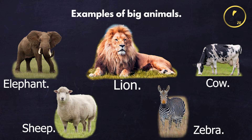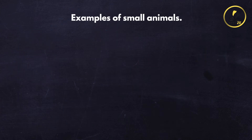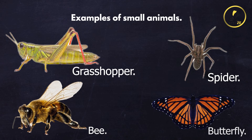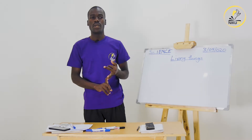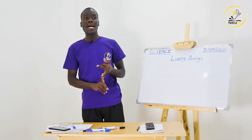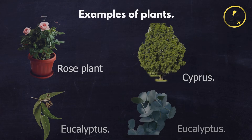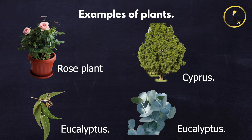goat, sheep, etc. Small animals include animals that are able to fly, like grasshopper, butterflies, spider, etc. Those are examples of animals. For plants we have rose plant, cypress, eucalyptus — and you can name the rest.